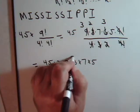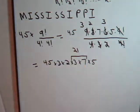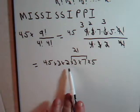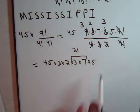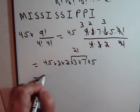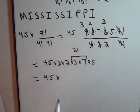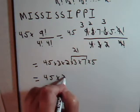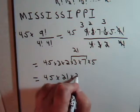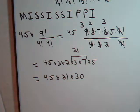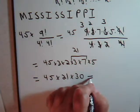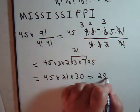Let's see, this is 21. Here we have 3 times 2 is 6, times 5 is 30. So this equals 45 times 21, times 30. And I think if we multiply those out, that comes out to 28,350.